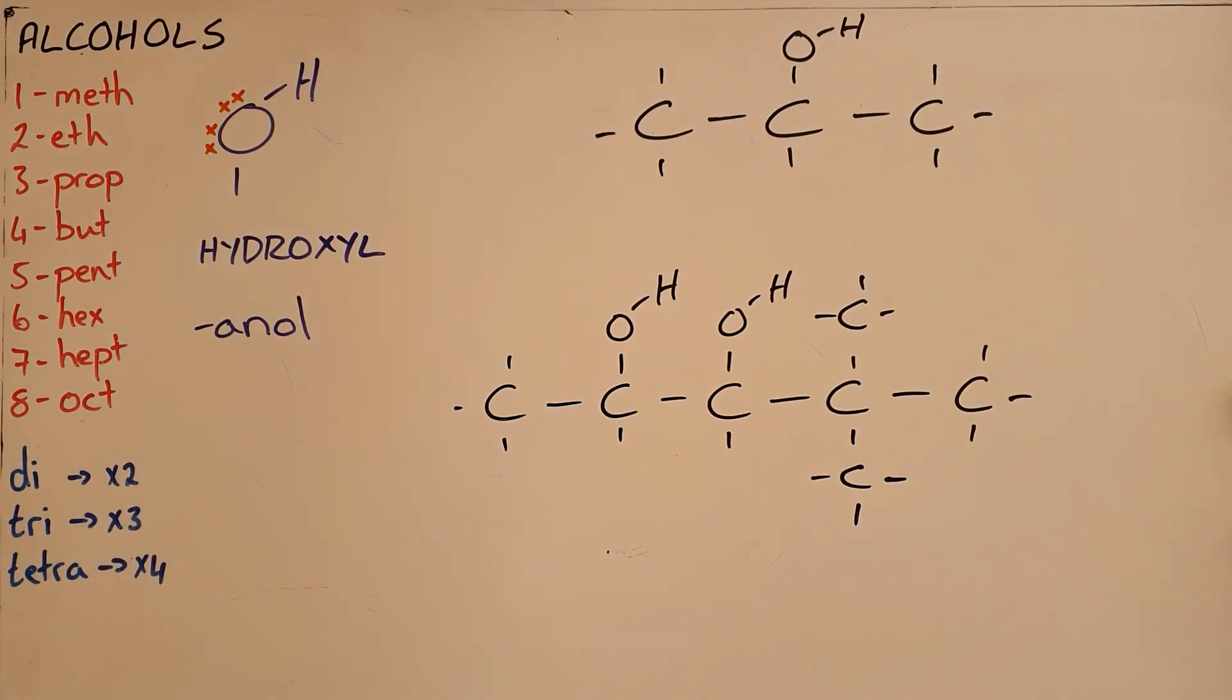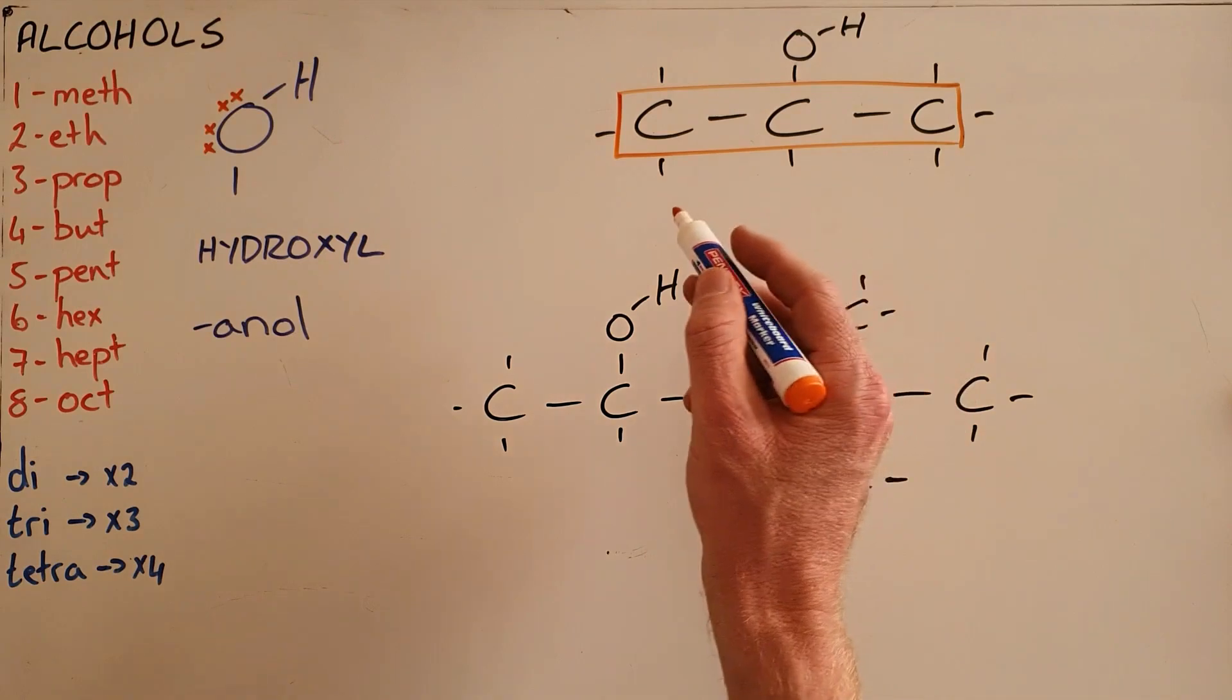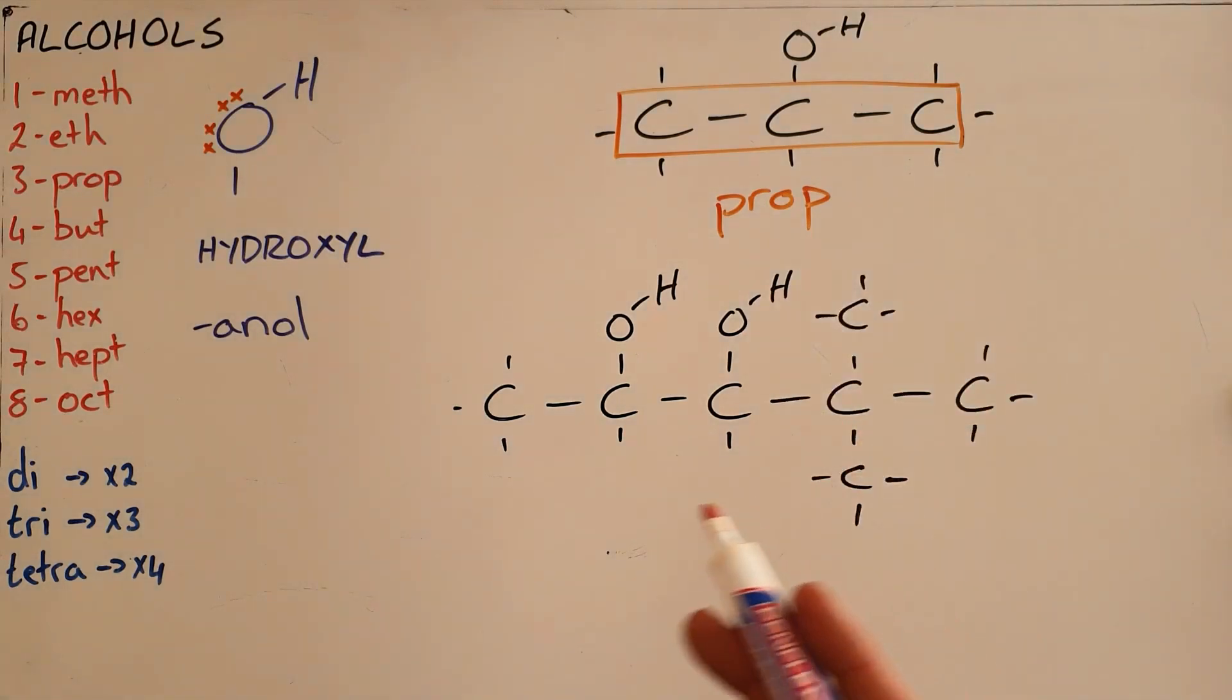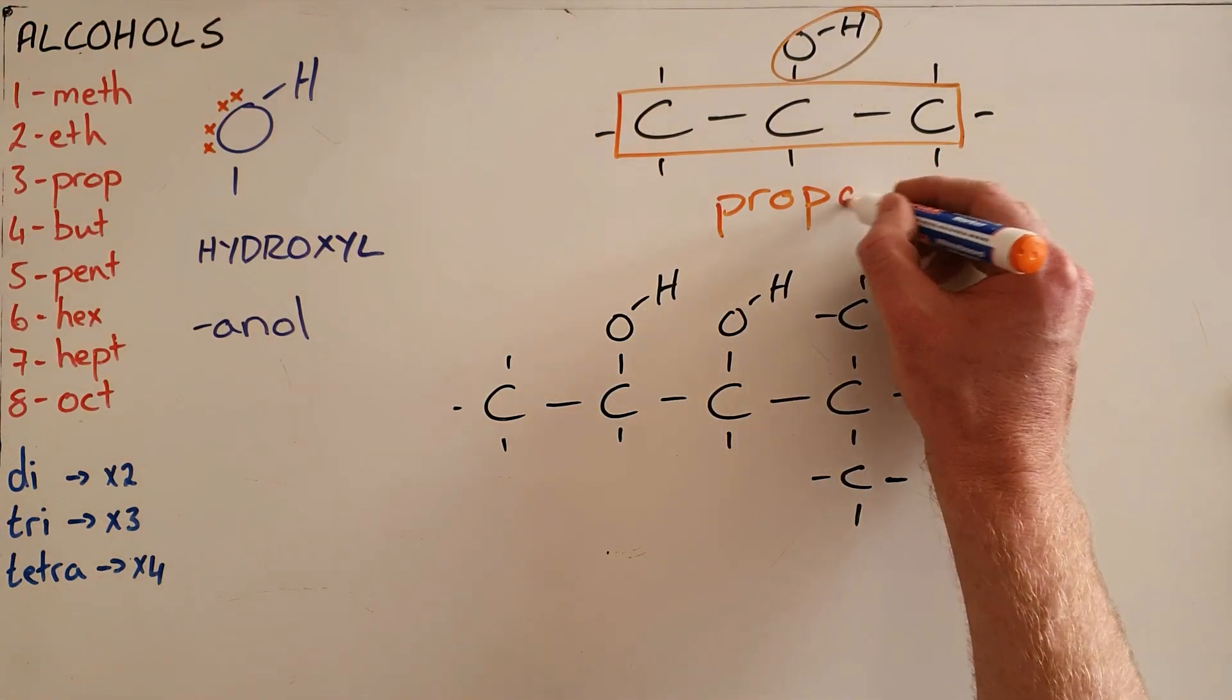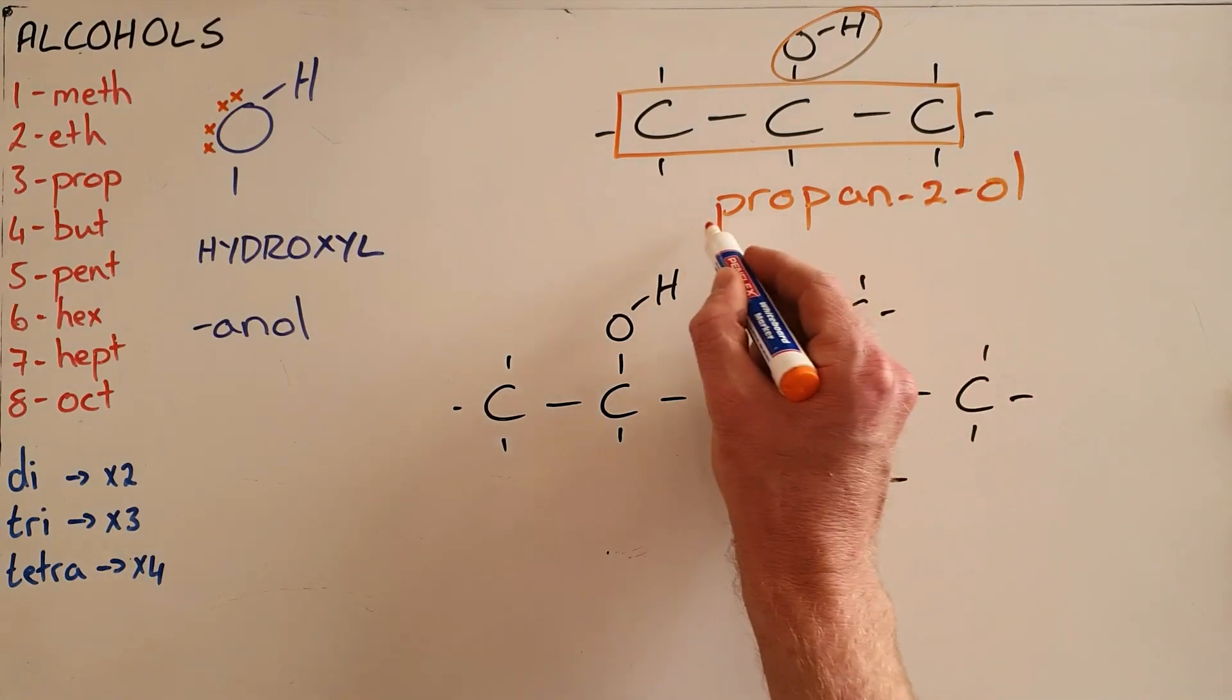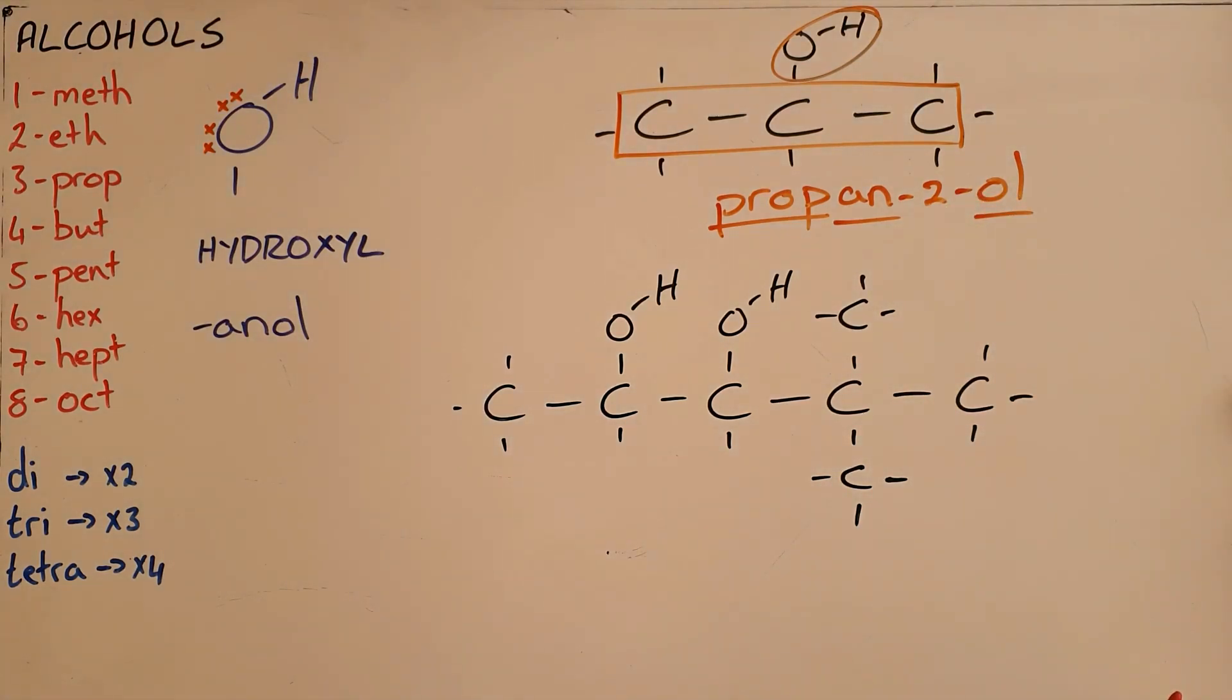The rules for how we name compounds remain very similar from there onwards. We would name this compound here first by identifying the longest carbon chain, which is three carbons, and three carbons gets the prefix prop. Now that we know it is an alcohol because it has this hydroxyl functional group, we know it should be propanol. But it is important to indicate the position of that hydroxyl group, so we would call this propan-2-ol, which says prop tells us it is a three carbon chain, anol tells us it is an alcohol, and the two tells us that the hydroxyl group is on the second carbon.